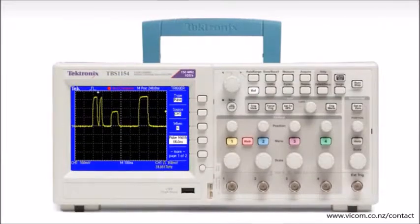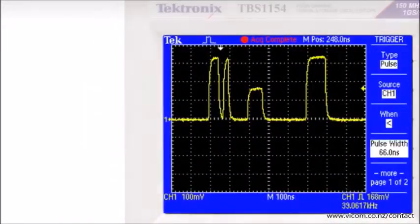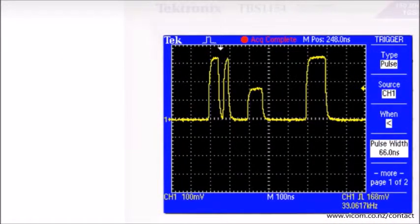In addition to basic edge triggering, the TBS 1000 includes pulse width triggering which can help track down narrow glitches and spikes, even if they occur randomly and infrequently.